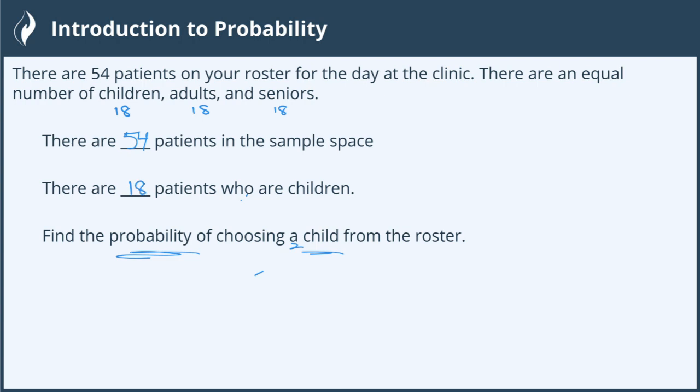Now that I know how many patients are children, and how many total patients there are, I can say that the probability of choosing 1 child from the roster is equal to the total amount of patients who are children out of the total amount of patients. If you simplify 18 over 54, that gives you 1 third.